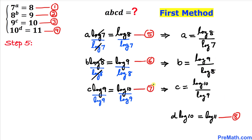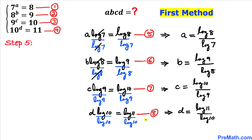Likewise, dividing equation seven by log of nine on both sides, we get: c equals log of ten divided by log of nine. And finally, dividing equation eight by log of ten on both sides, we get: d equals log of eleven divided by log of ten.